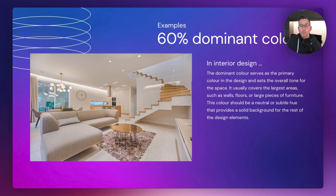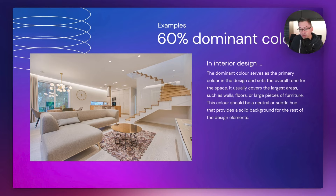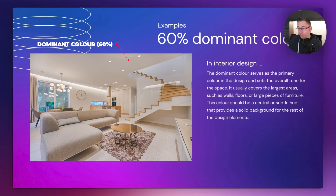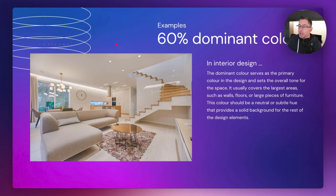Here's an example of the dominant color. If you look at that picture, where do you think the dominant color is? Pretty obvious, right? It's all around the edges — the paintwork — everything like that makes up the dominant color of that particular image. Now when you talk about the 30%, can you guess where that is?